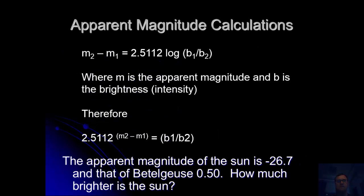Now apparent magnitude, where m is the apparent magnitude and b is the brightness or intensity, therefore because of this relationship, we find that m2 minus m1 equals 2.5112 log of b1 divided by b2.